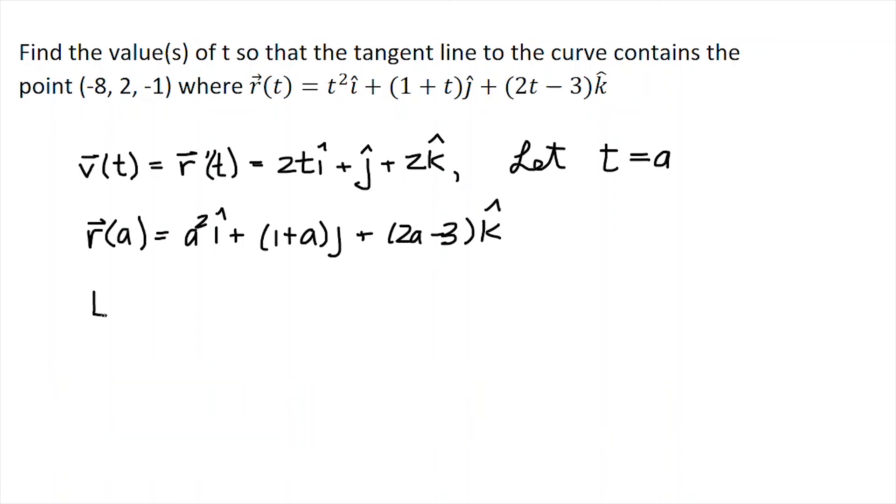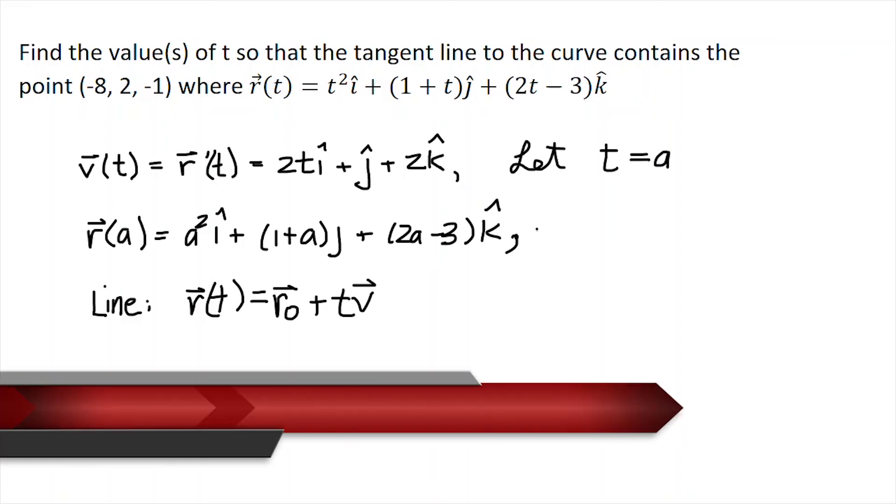I just want to remind you about the equation of a line in space. Just to refresh your memory, that's r(t) = r₀ + t times the direction vector. Well, we have a direction vector for the tangent, don't we? We've just calculated that.